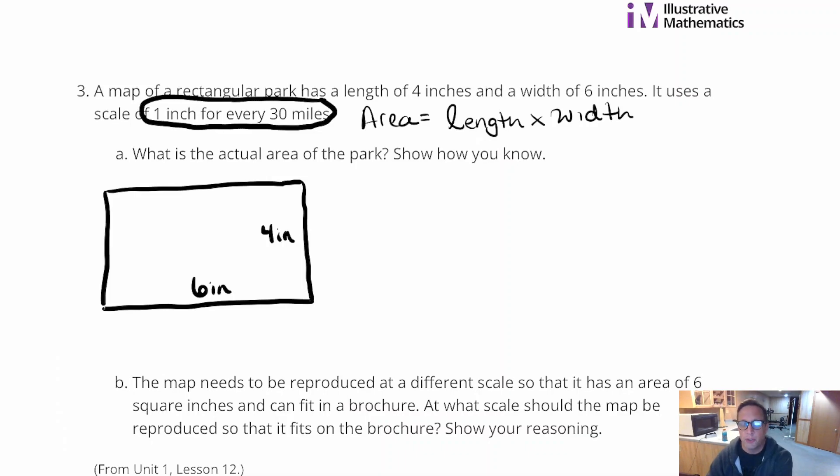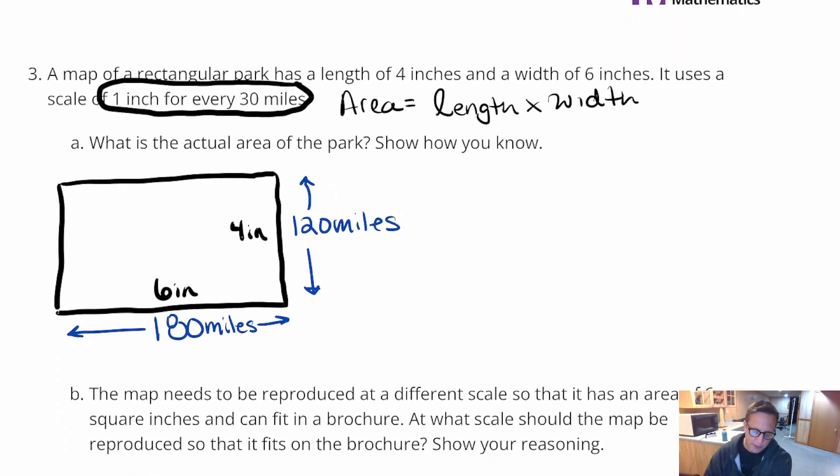The scale tells us that 1 inch is equivalent to 30 miles. So every inch, 2 inches is 30 times 2, 3 inches is 30 times 3. So it's just a basic multiplication, a multiplicative pattern. So just multiply by the number of inches, and you'll get how many miles long it is. If we just do 4 times 30, we're going to get 120 miles right here. And then 6 times 30 is 180.